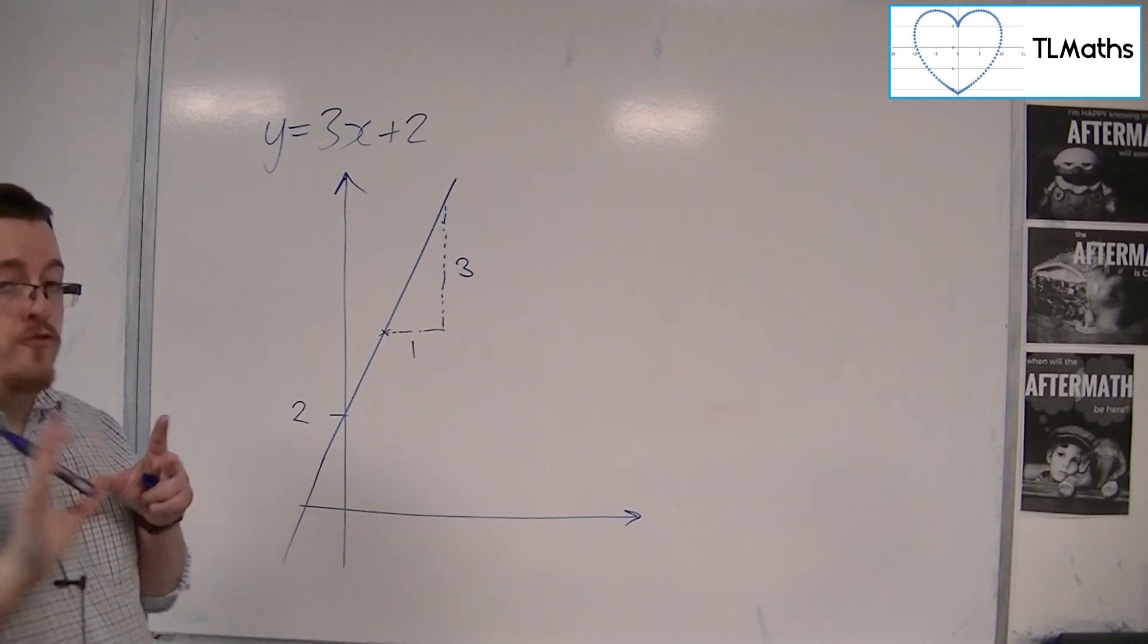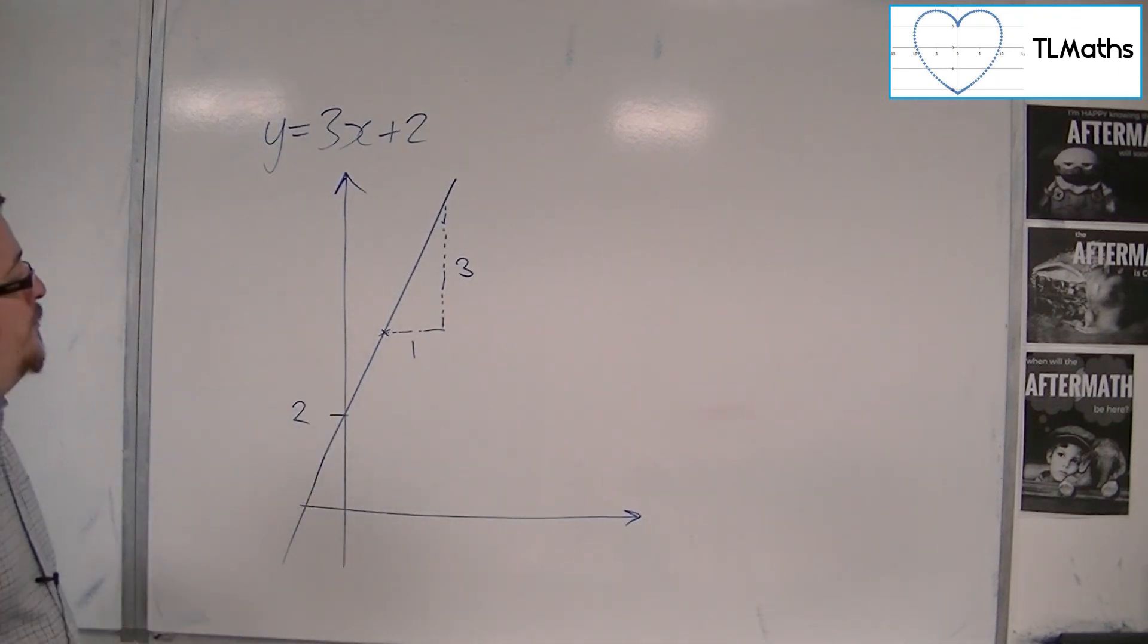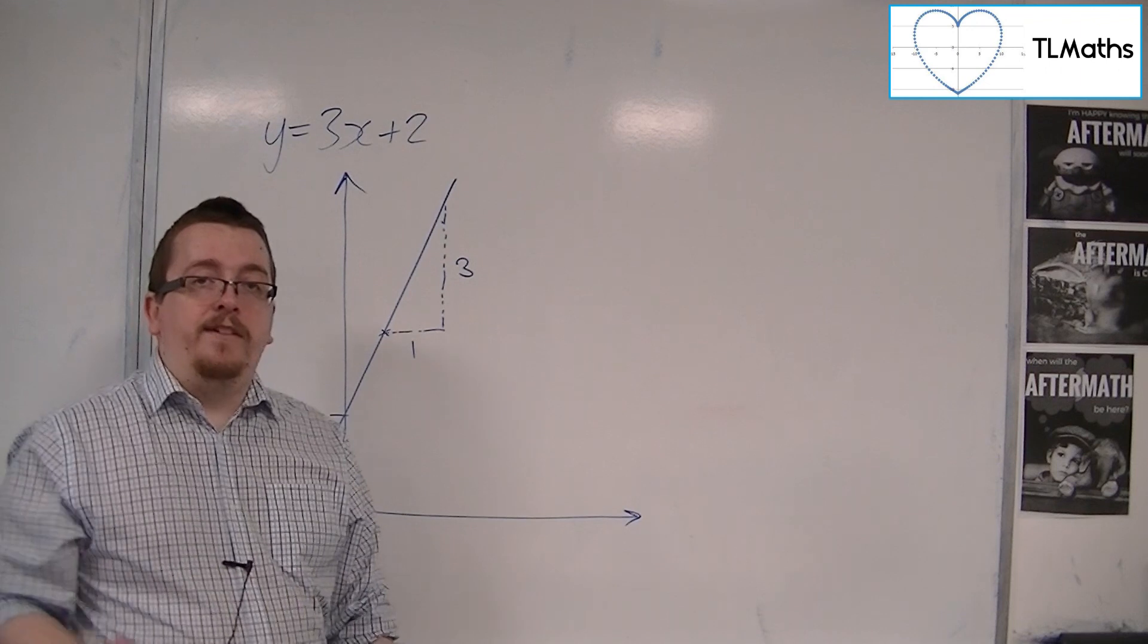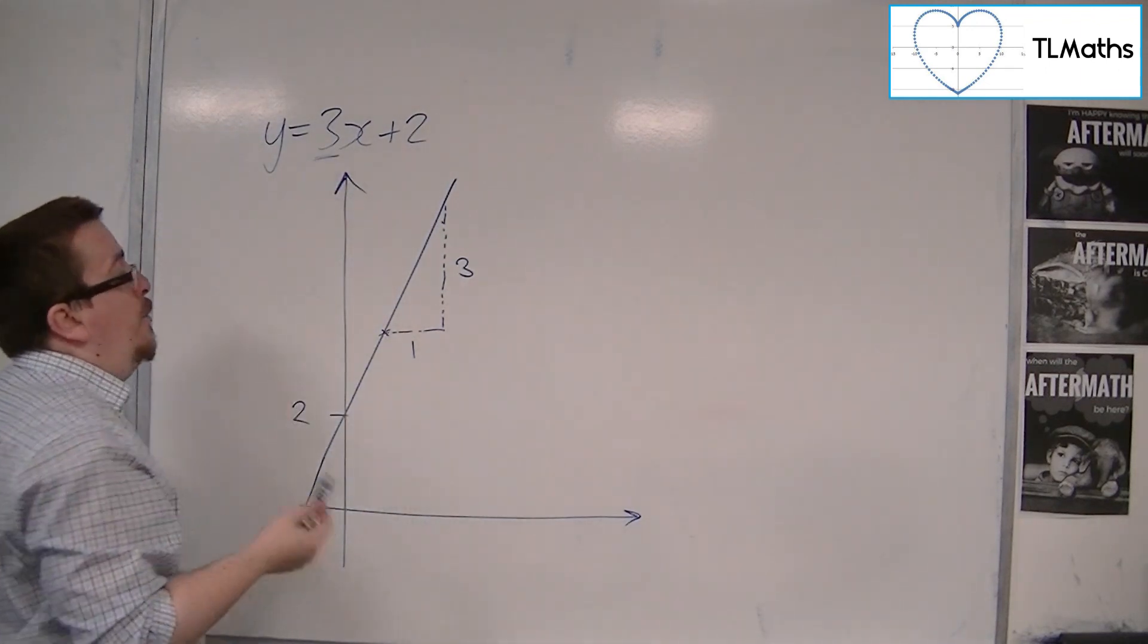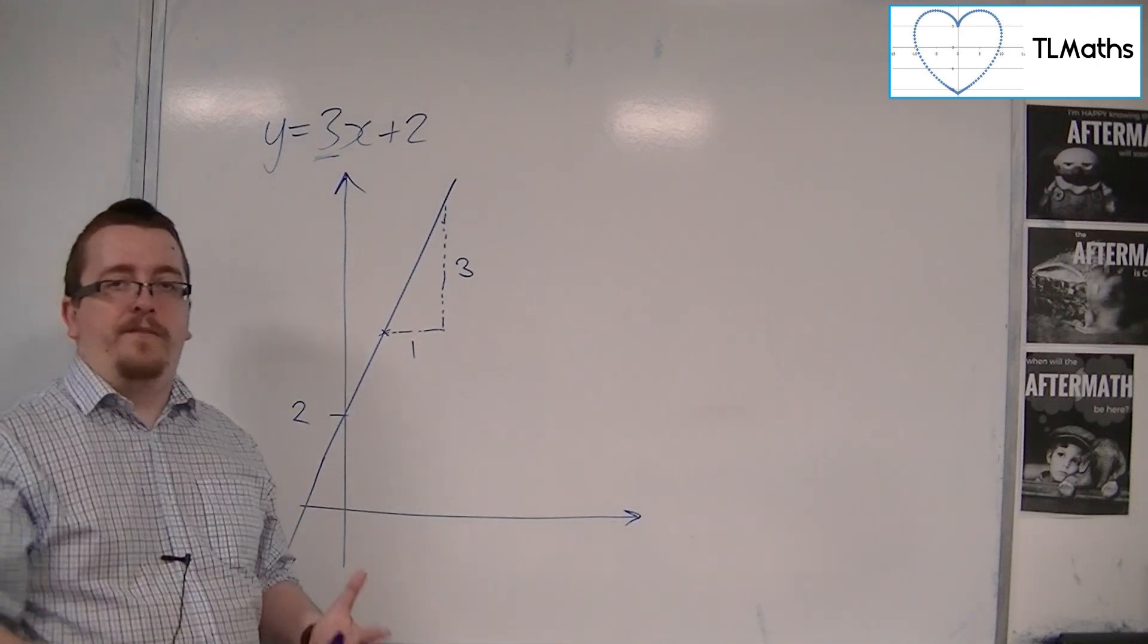So for every one I go along, it moves up three. And this is how we identify the gradient of this line. It is this 3, the coefficient of x, the number in front of the x.